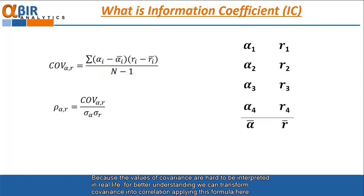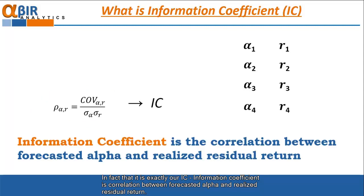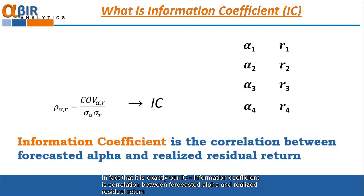Because the values of covariance are hard to be interpreted in real life for better understanding, we can transform covariance into correlation applying this formula here. In fact, it is exactly our IC, information coefficient. Information coefficient is correlation between forecasted alpha and realized residual return.